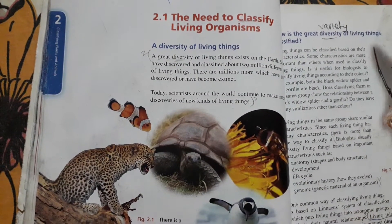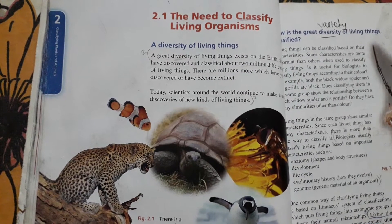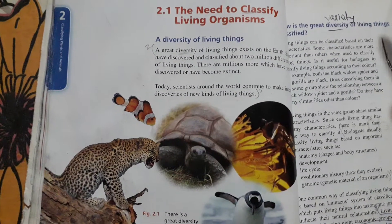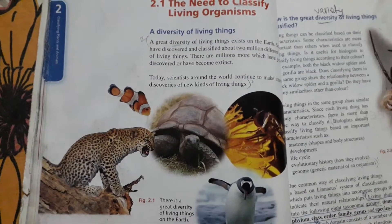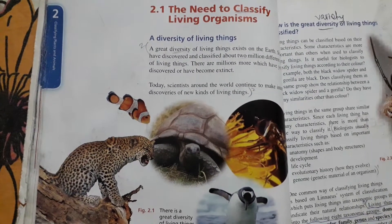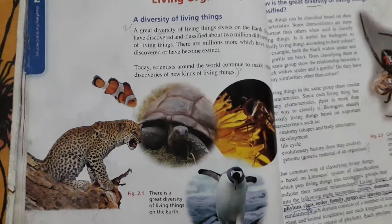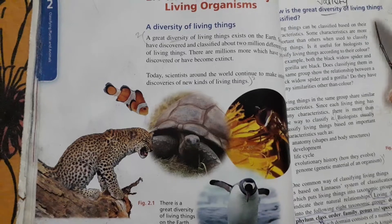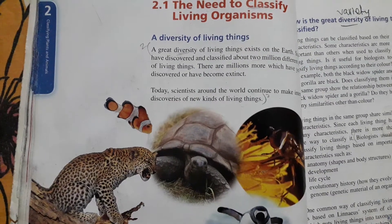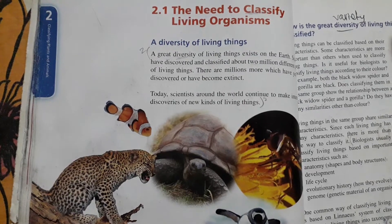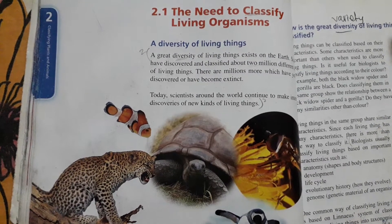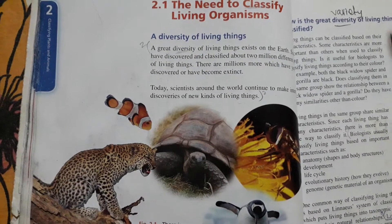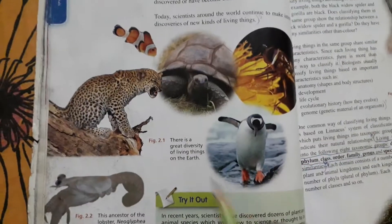Why is there a need to classify living things into groups and subgroups? Plants are of different types — different types of plants come from different places, different seasons of growth, and their habitat is different. The mode of living is different. Animals are different from plants. The characteristics of animals are similar to other animals.